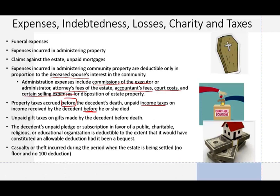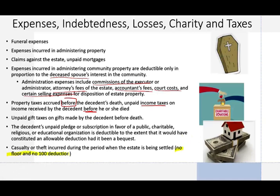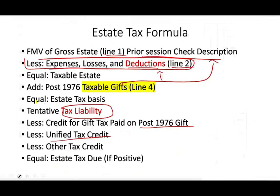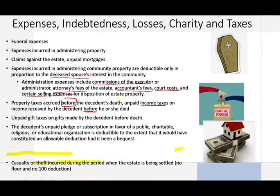If there's any casualty or theft loss incurred during the period when the estate is being settled, those are deductible — but the rules are a little different: we don't have the floor or the $100 deduction. Charitable contributions designated in the decedent's will are deductible; if the decedent stated in their will they would like to contribute $5 million to a charity, that's deductible. If the executor wants to contribute on their own, that is not deductible from the gross estate. So in summary, those are the expenses and losses that are allowed as deductions from the gross estate — the more you can deduct, the better, because you'll pay less taxes.